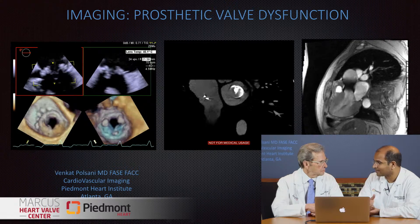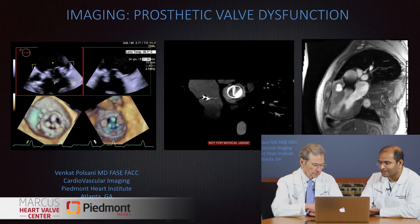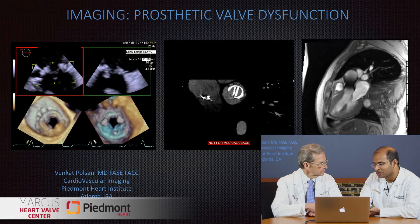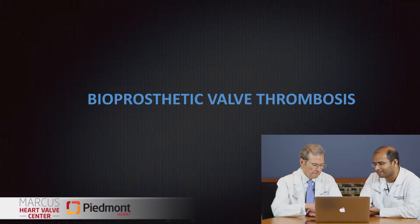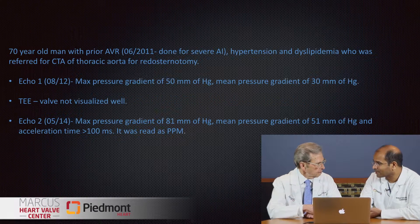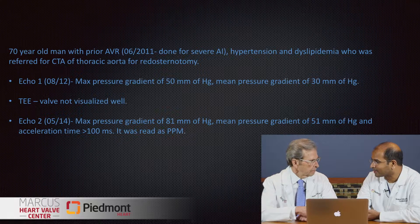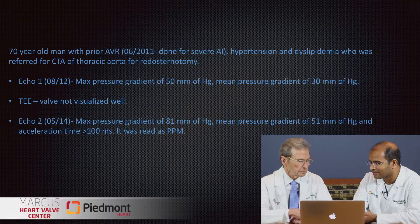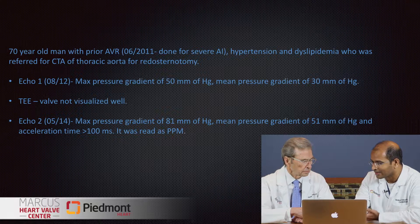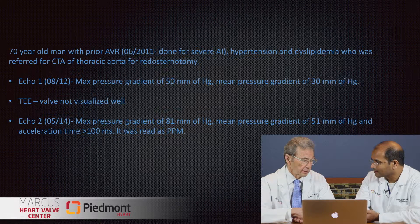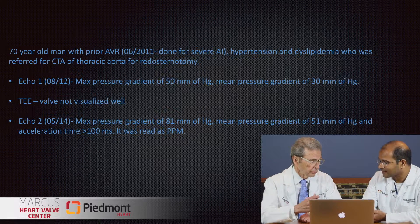Thank you, Randy. I want to share some cases we've come across recently in our CT and MR lab. Imaging of prosthetic valve dysfunction — here's a patient we scanned recently for bioprosthetic valve thrombosis. This is a 70-year-old man referred to our lab for reduced sternotomy. He had an AVR done in June of 2011. He had an echo done about a year after that which showed slightly higher gradients, and he had a TEE as well shortly after that which could not visualize the valve leaflets. About a year out, he has a peak gradient of 50 and a mean of 30 — pretty abnormal, but the TEE couldn't see it.